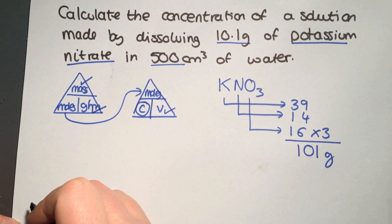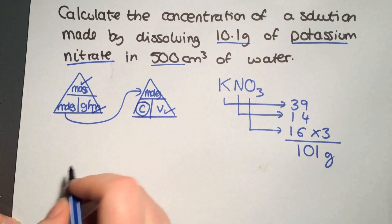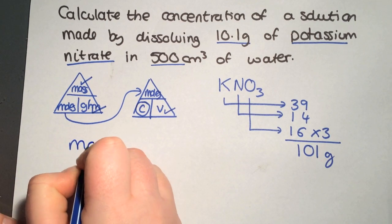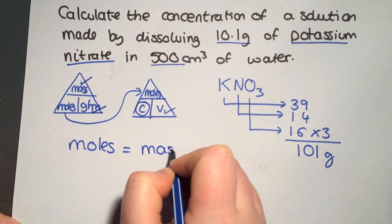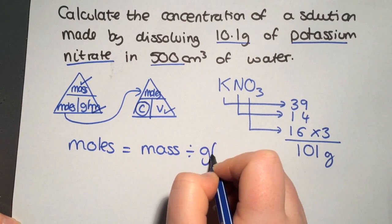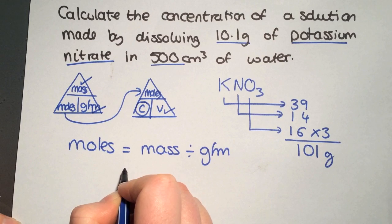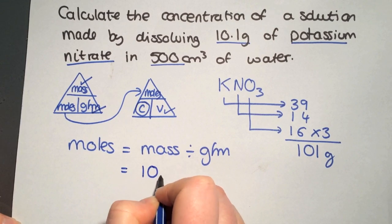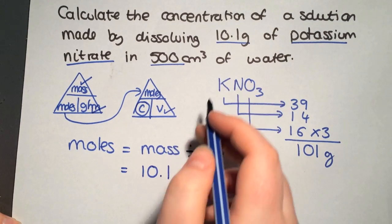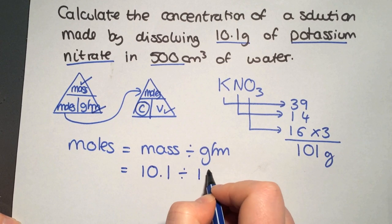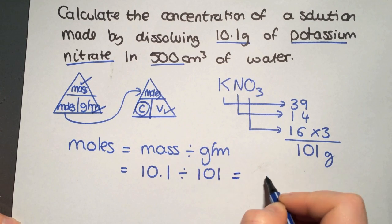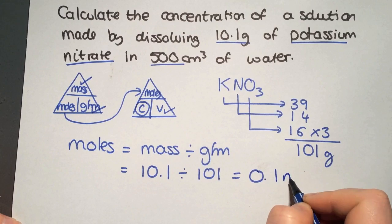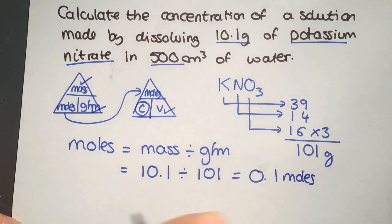Now we'll calculate moles. Moles equals mass divided by gram formula mass. Our mass is 10.1 grams divided by 101, which gives us 0.1 moles. That means we have a second tick for this triangle, so we're trying to work out concentration.